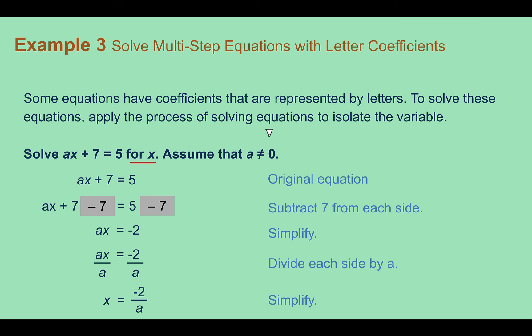Just like before, my first step would be to undo that plus 7 by subtracting 7 from both sides. When I do that, 7 minus 7 is 0, and then 5 minus 7 is negative 2. Now I'm left with ax equals negative 2.